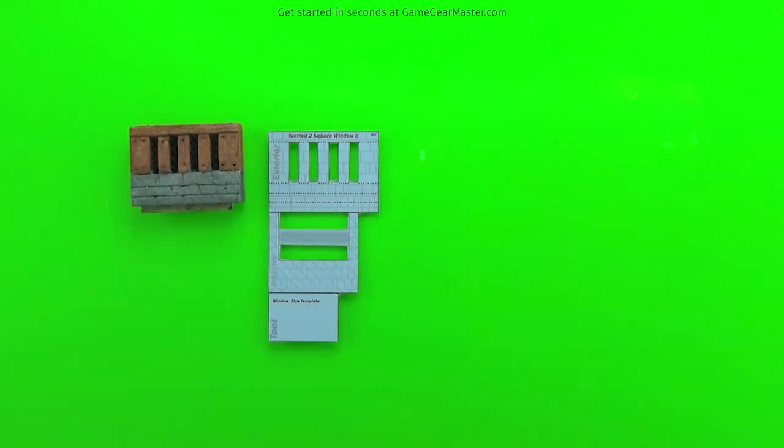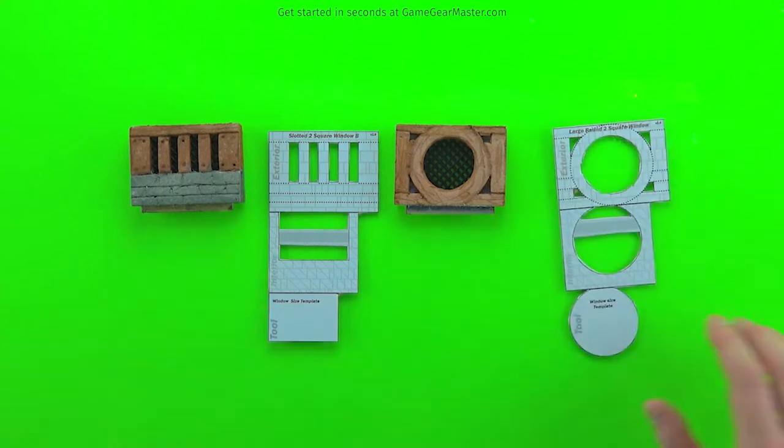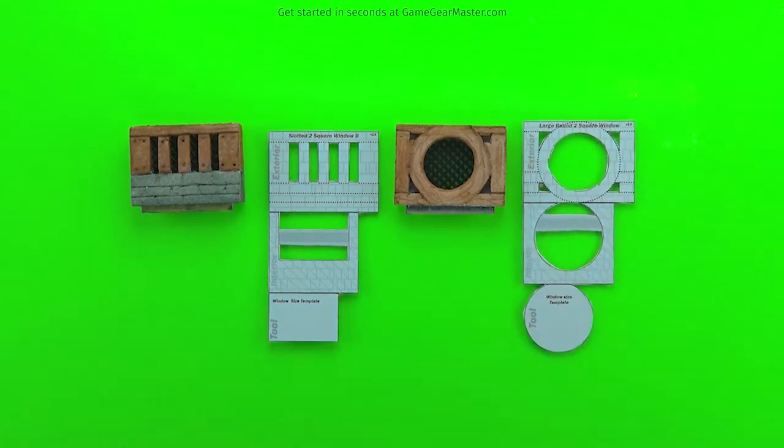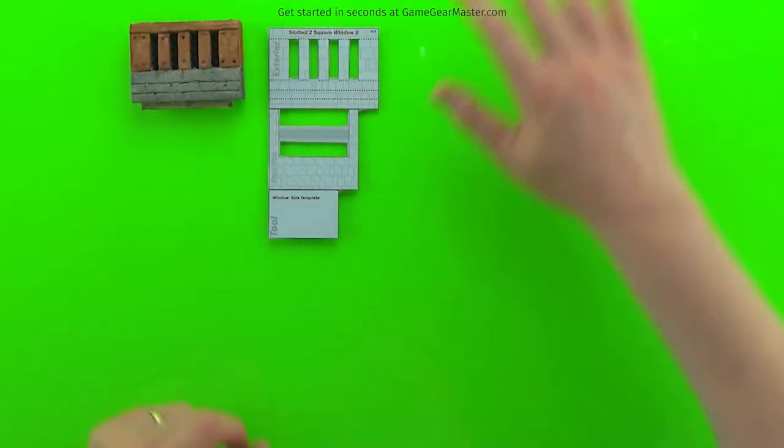Windows are very similar to walls. They just have this additional piece that's a window template. And then also you'll notice the interior part of the wall has a void in it where the window will go. We're going to make two different windows in this tutorial, just so you can see what it's like to make a square and a rectangular window.